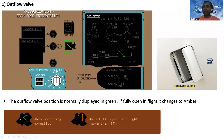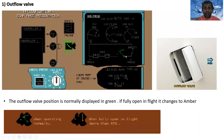The first item is the outflow valve. On the diagram you can see the outflow valve on the cabin pressure page. The outflow valve position is normally displayed in green. If it is fully open in flight — more than 95% — it changes to amber color.